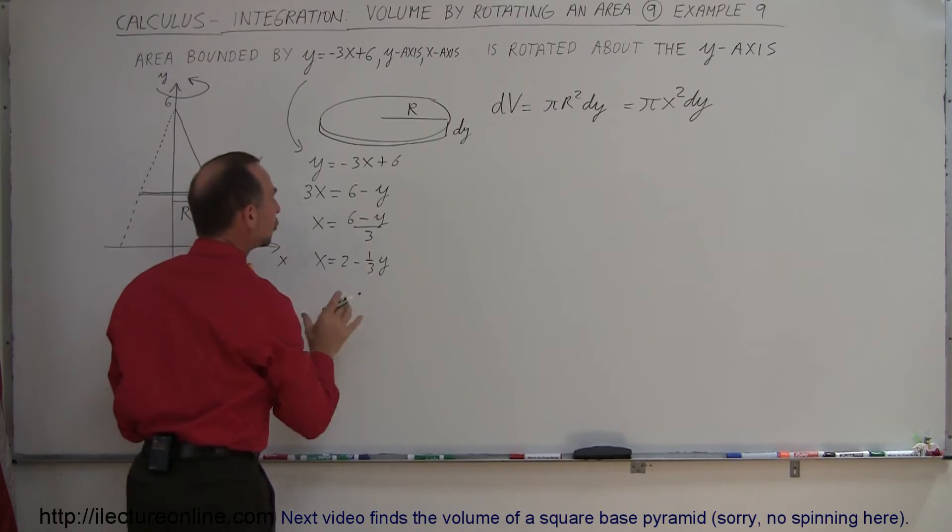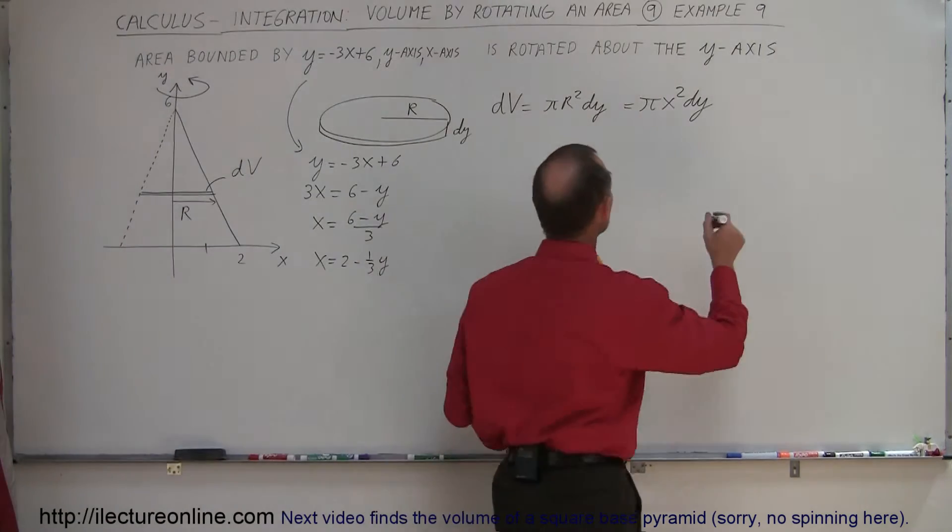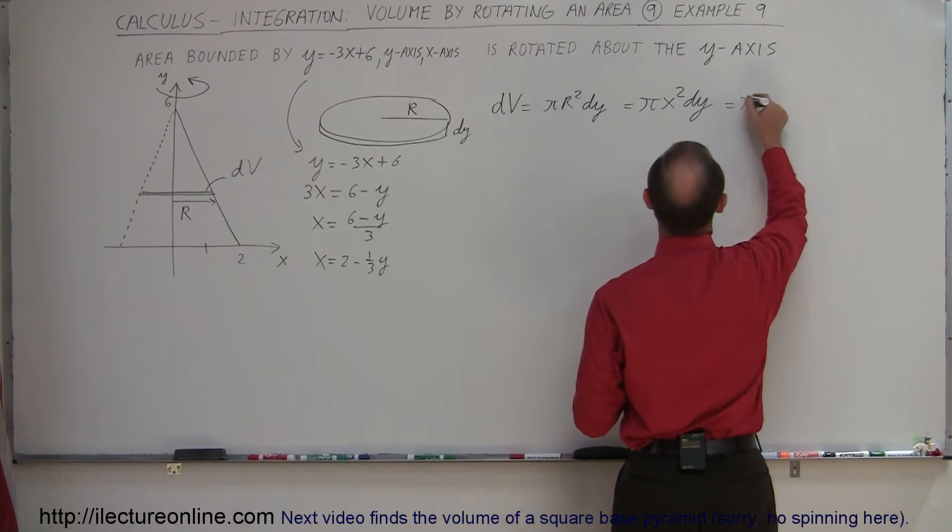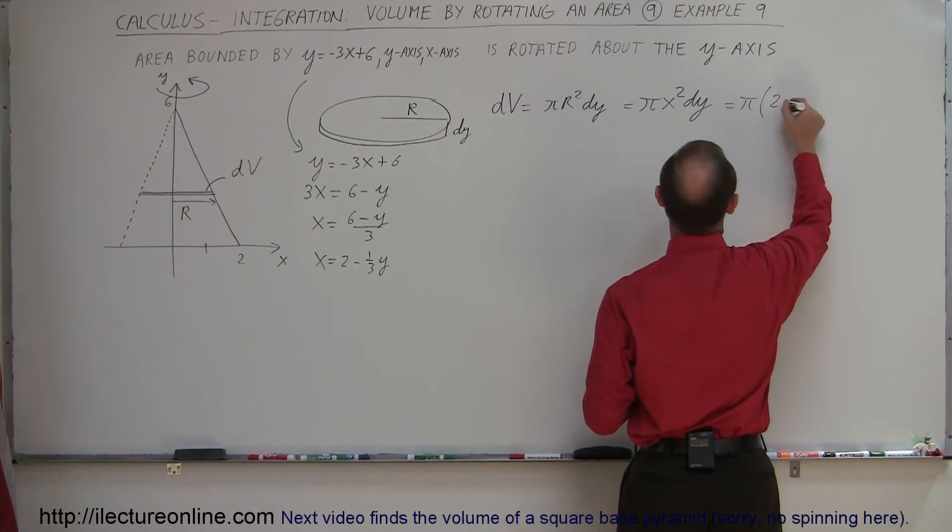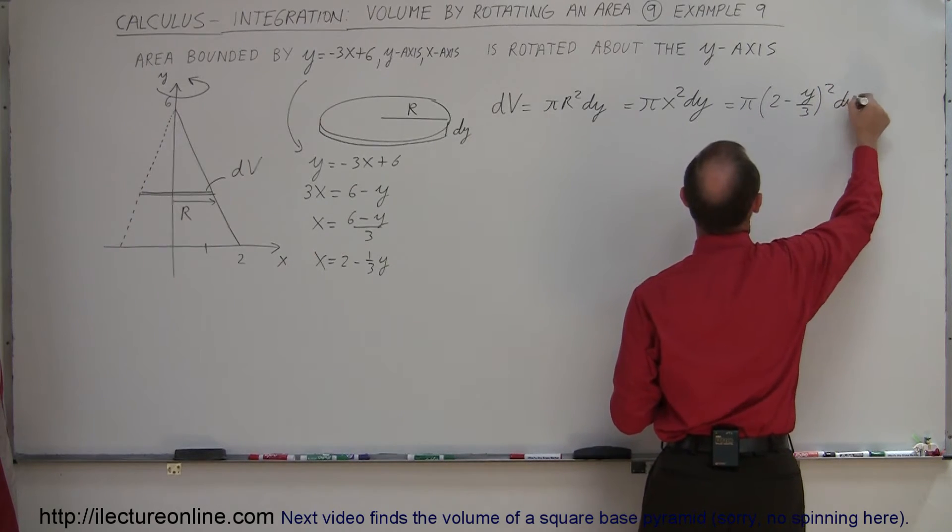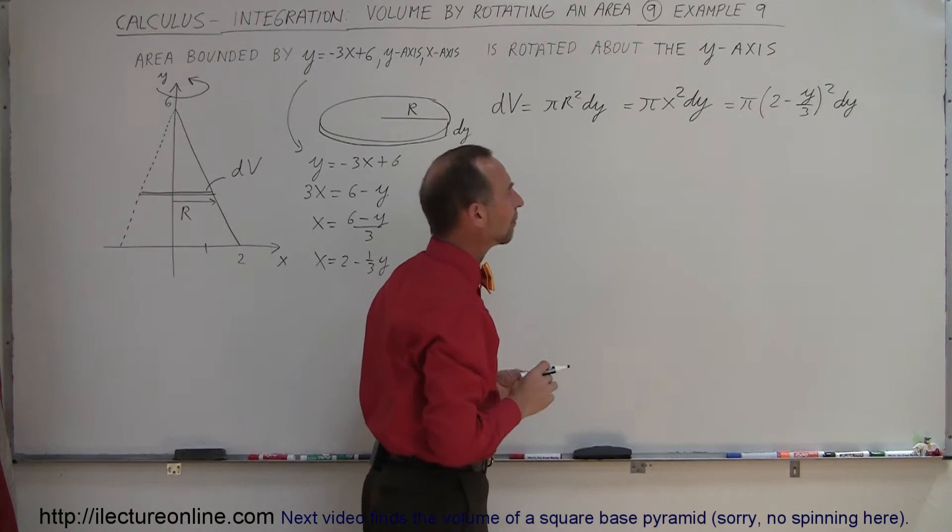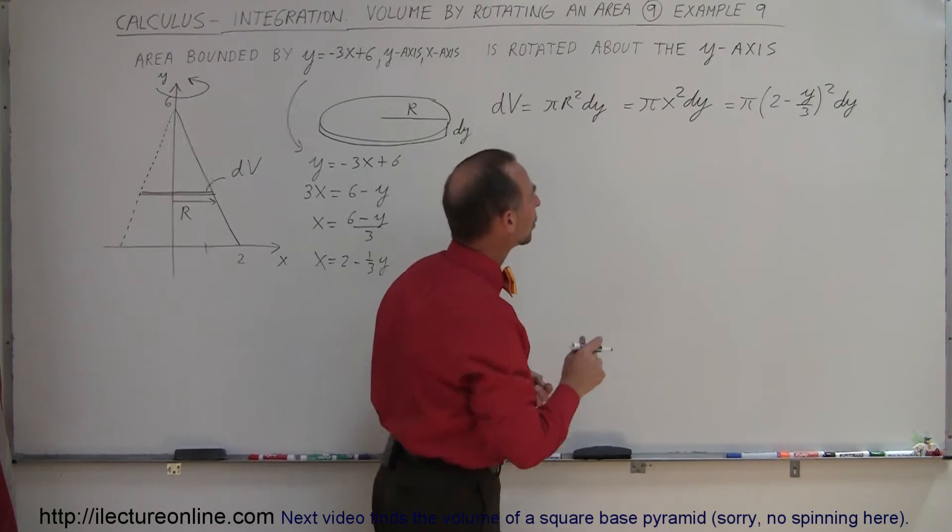So instead of writing x squared, I can write 2 minus 1 third y and place it in there. So therefore my dv now becomes π times the quantity 2 minus y over 3, quantity squared dy. And I'll go ahead and multiply everything out. We have a binomial there. We'll square the binomial.